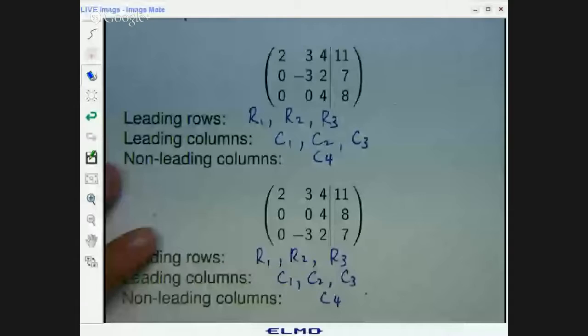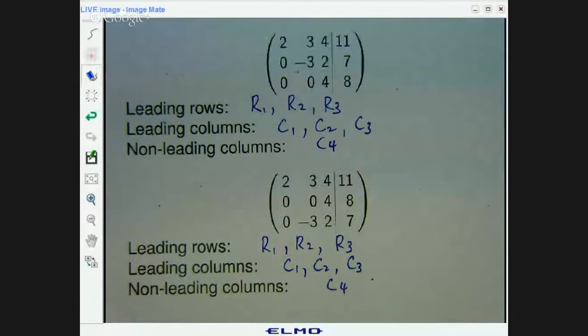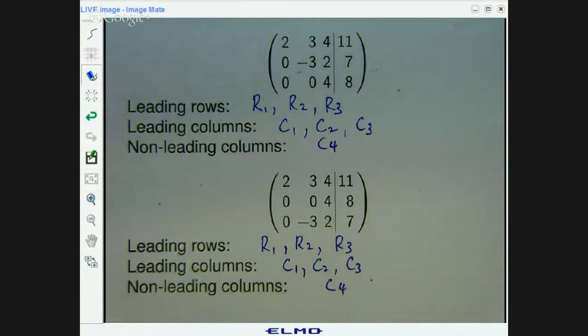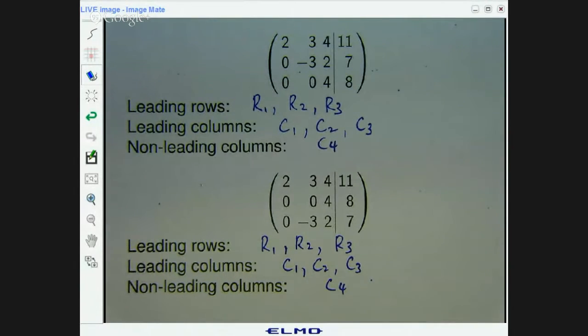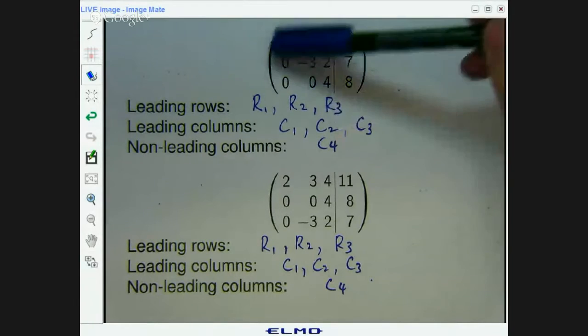So here are some matrices from a previous video. We were talking about leading rows and leading columns, etc. Is this in a row echelon form?